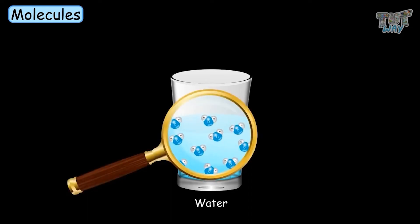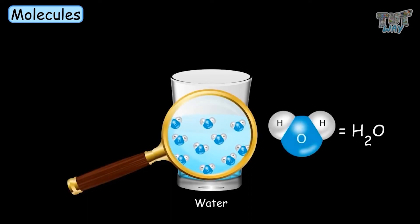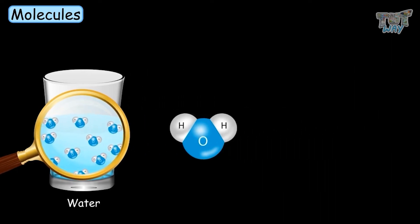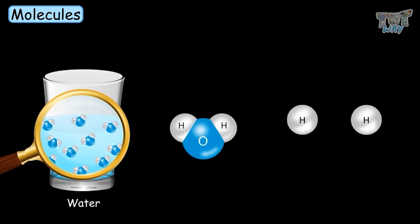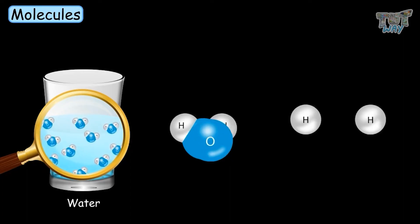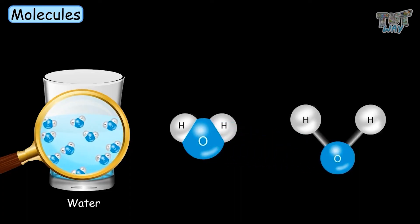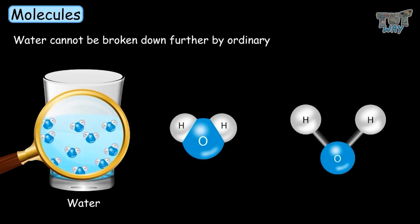And each molecule is denoted as H2O, which means each water molecule has two atoms of hydrogen and one atom of oxygen. You cannot further break down this molecule into atoms by ordinary chemical means.